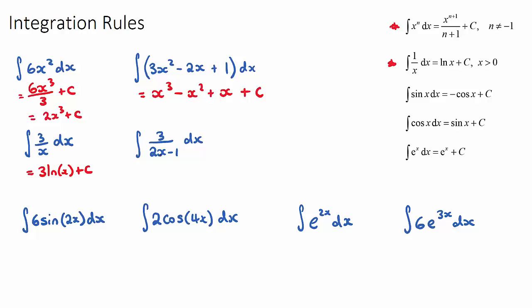For an example with a numerator and a more complex denominator, the rule of thumb doesn't quite show the full picture. When we integrate a function where x is on the bottom, the entire denominator goes inside our ln function. So it will be 3 at the front, ln of (2x minus 1), and then the derivative of the denominator — which is 2 — goes on the denominator of our answer. This is actually the reverse of differentiating an ln function.